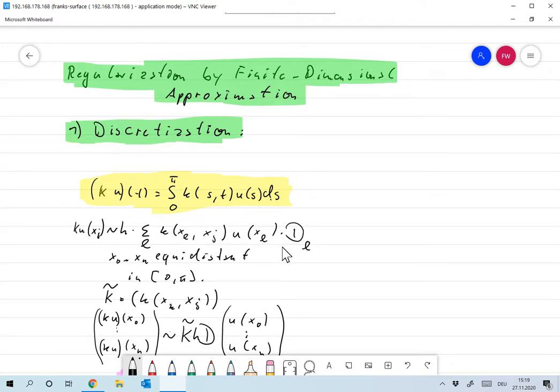You will remember from numerical analysis that there are several ways of discretizing such an integral. For example, the trapezoidal rule where the d_l are all the same except for the first and last one which are one half. Another one would be Simpson, the Simpson formula, where the d_l are ordered like 1, 4, 2, 4, 2, 4, and then 1 in the end.